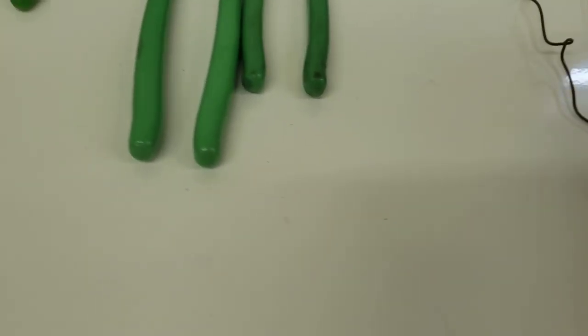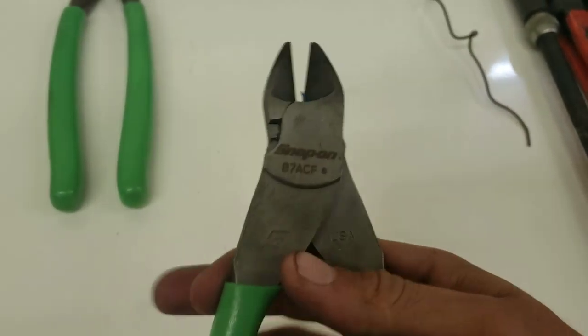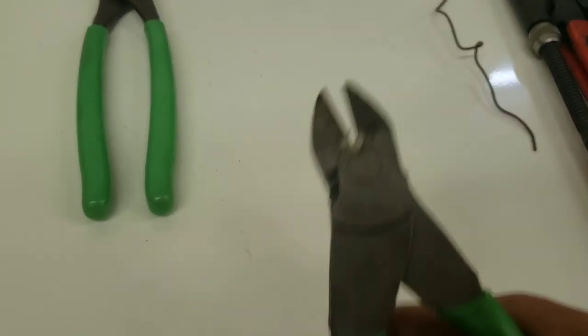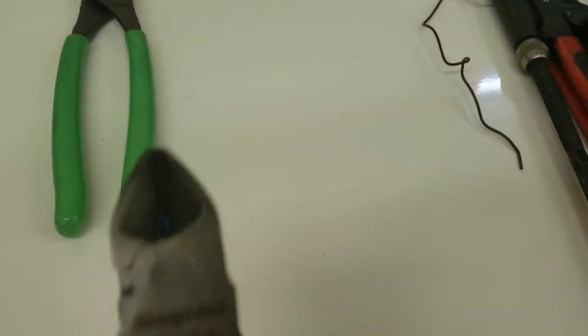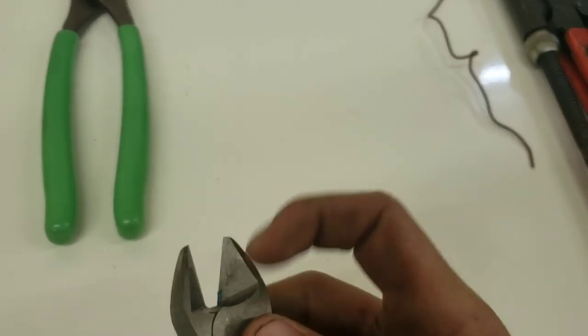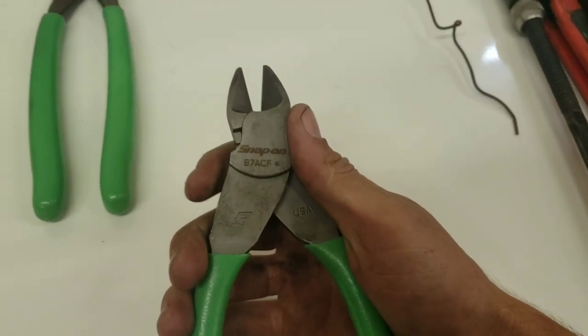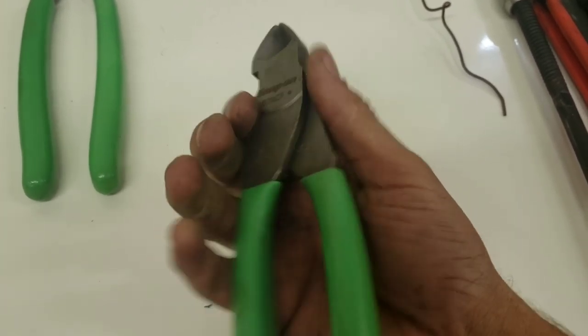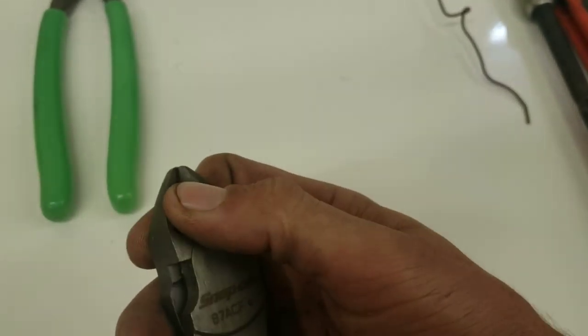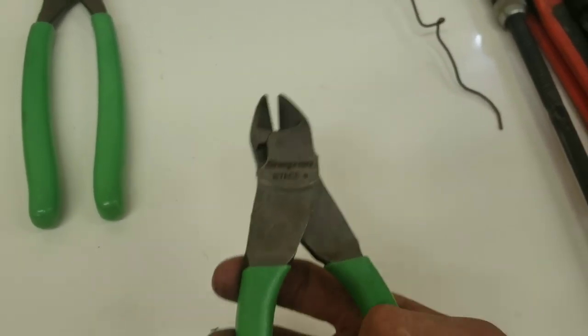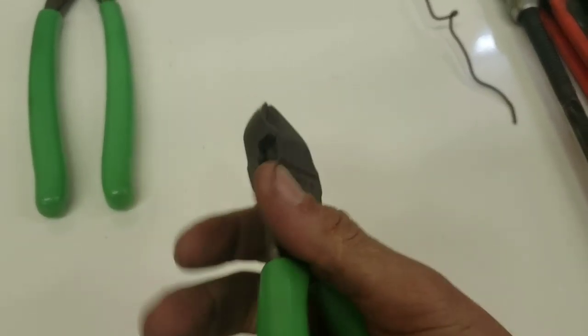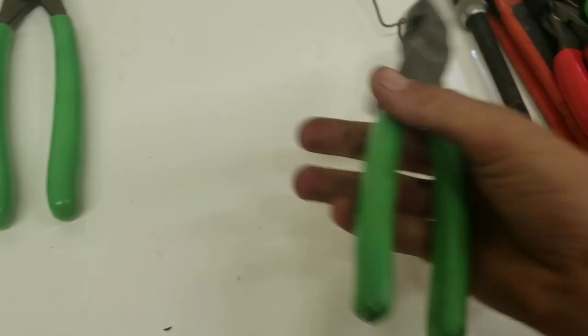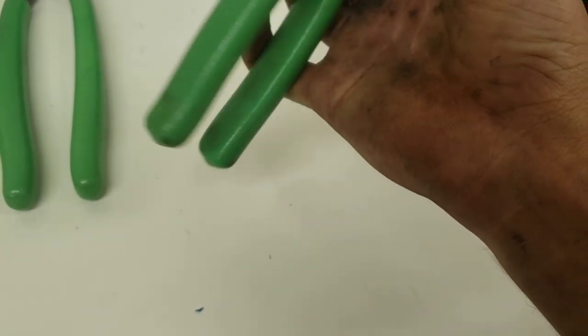Next are the big Snap-on side cuts, the 87ACF. I've heard people complain they go dull quickly, but I've had this pair for about two and a half years. I cut a lot of metal wire and fencing wire with them, and they're still as sharp as when I first got them. The only downside is the green handles get dirty.